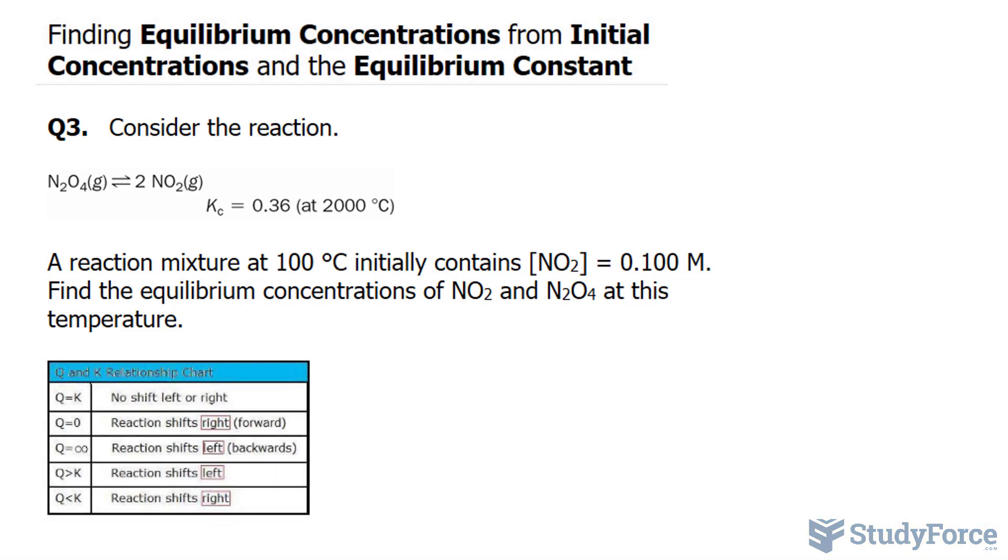The first thing that I want to do is create an ICE table. So I'll rewrite this reaction as N2O4, and that yields in both ways, two molecules of NO2. An ICE table organizes the information for the initial, change, and equilibrium concentration. So I, C, E.